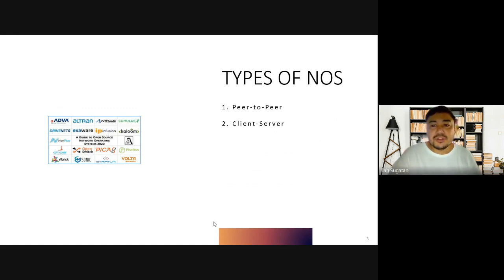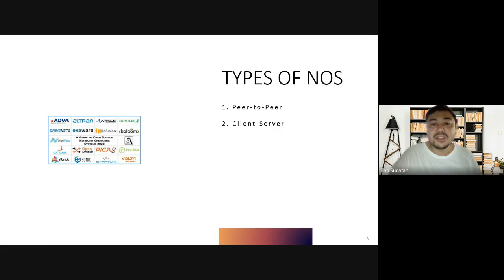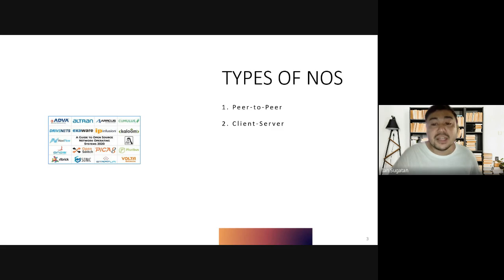There are two types of network operating systems: number one is peer-to-peer, and number two is client-server. But before we dive into those two types, let's define first what a network operating system, or NOS, is. NOS is a specialized operating system for a network device such as a router, switch, or firewall. Historically, operating systems with network capabilities were described as network operating systems because they allowed personal computers to participate in a network and share file and printer access within a local area network.